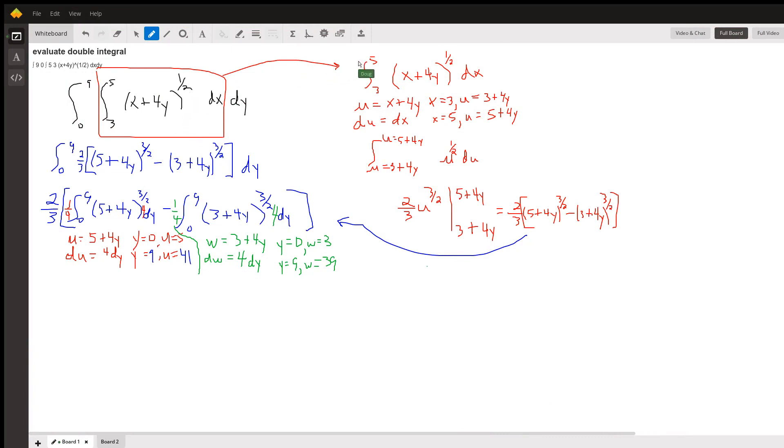Over here in red, I'm evaluating the inner definite integral. I decided to use u-substitution to make it clear what's going on. If u equals x plus 4y, du equals dx, so I don't have to modify this dx at all.